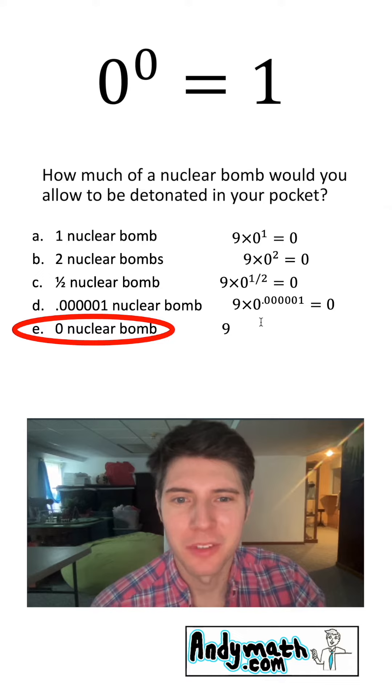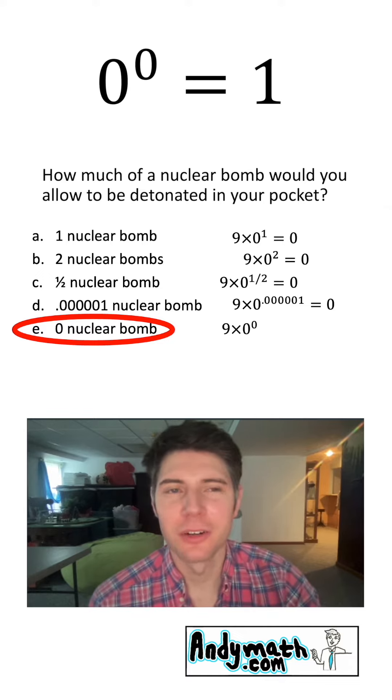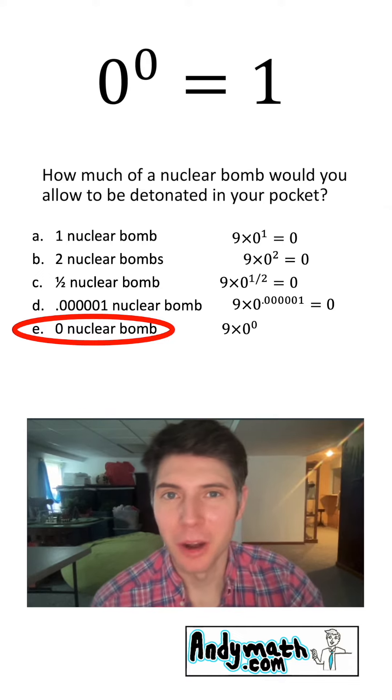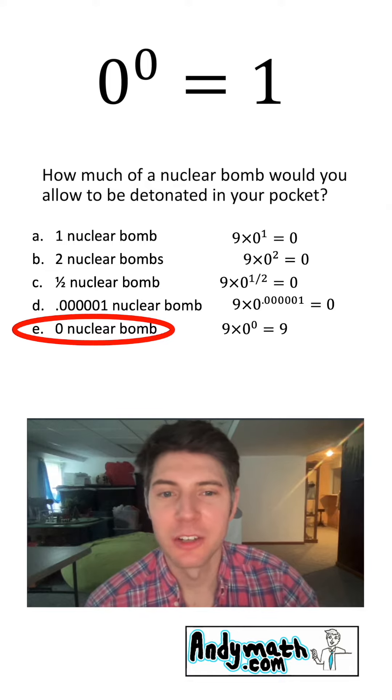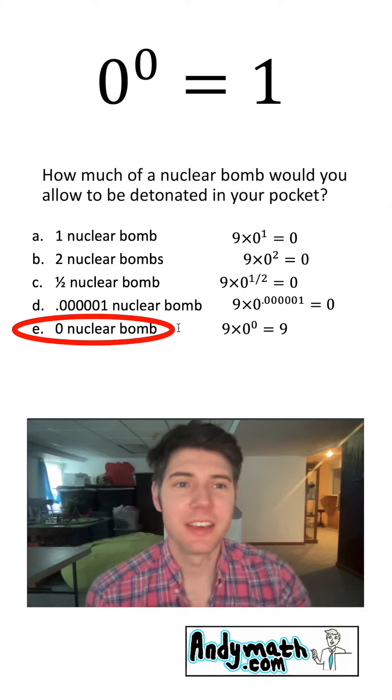But what about no nuclear bombs? No zeros. Well, we would call that zero to the zero. And if there's no nuclear bombs, if there's no zeros, it's still going to be equal to nine. It's going to keep its identity.